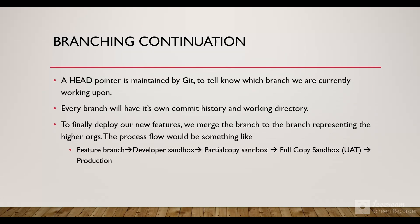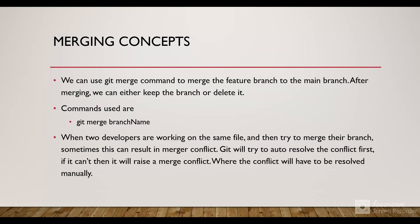Then we'll discuss merging - merging one branch to another, for example merging our feature branch to our sandbox branch or production branch. Within merging we'll see what a merge conflict is and how Git handles it, and how we sometimes have to manually resolve those merge conflicts.